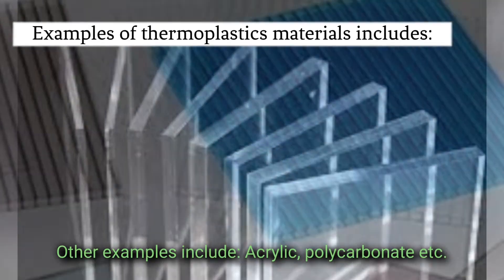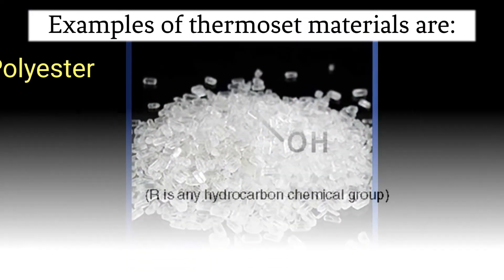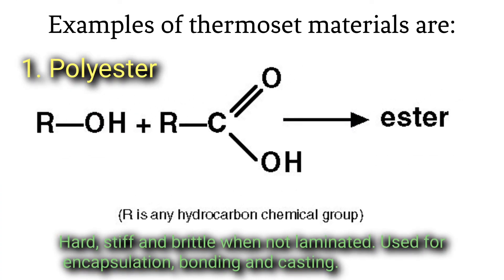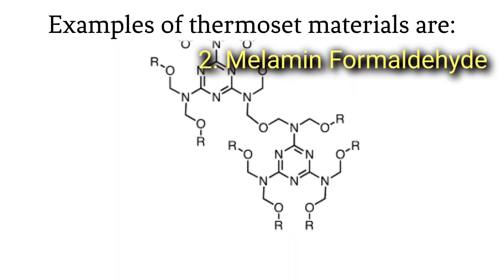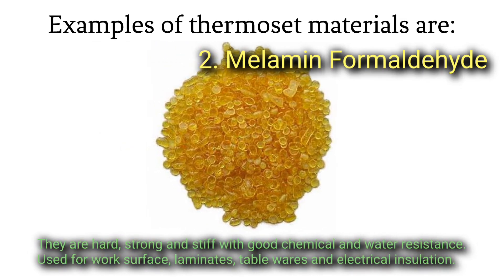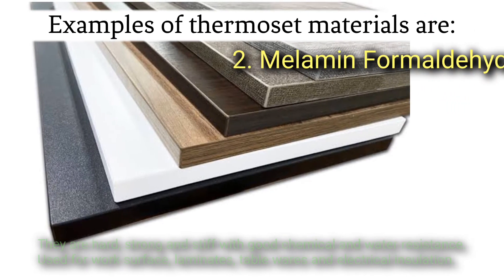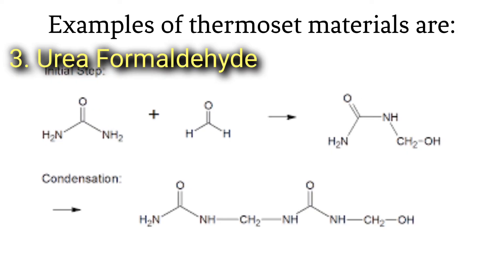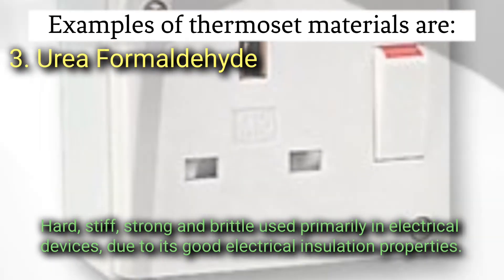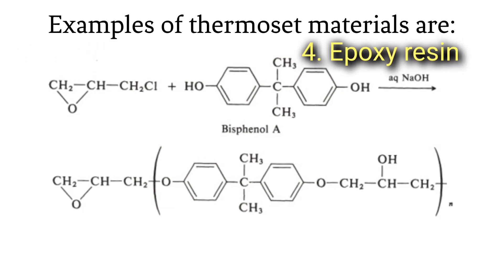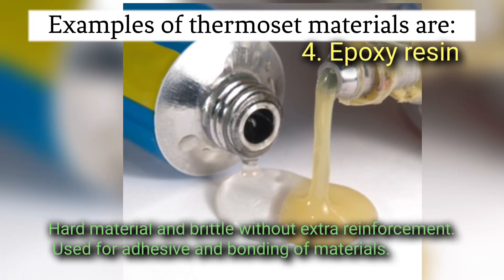Examples of thermoset materials are: Polyester - hard, stiff, and brittle when not laminated, used for encapsulation, bonding, and casting. Melamine formaldehyde - hard, strong, and stiff with good chemical and water resistance, used for work surface laminates, tablewares, and electrical insulation. Urea formaldehyde - hard, stiff, strong, and brittle, used primarily in electrical devices due to its good electrical insulation properties. Epoxy resin - hard material and brittle without extra reinforcement, used for adhesive and bonding of materials.